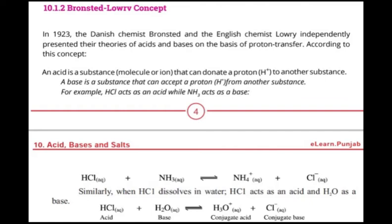In the same way, a base is a substance, molecule, or compound that can accept the proton. So acid is a substance that can donate a proton, and base is a substance that can accept the proton. According to the Lowry-Bronsted concept, we have two definitions: acid and base.